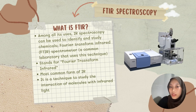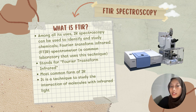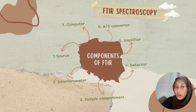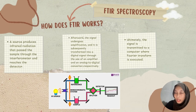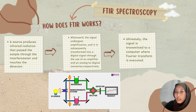FTIR stands for Fourier Transform Infrared and can be used to identify and study chemicals. It is a technique to study the interaction of molecules with infrared light. The components of FTIR include: source, interferometer, sample compartment, detector, amplifier, analog-to-digital converter, and computer.